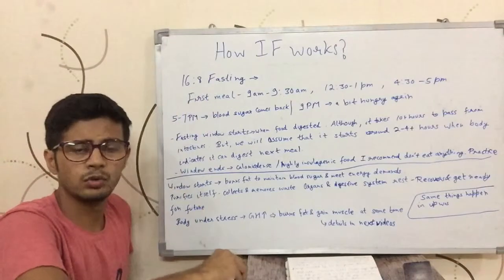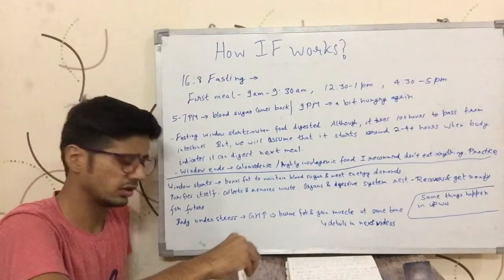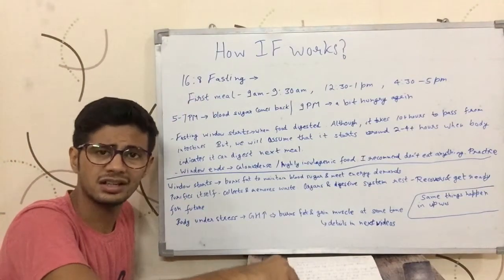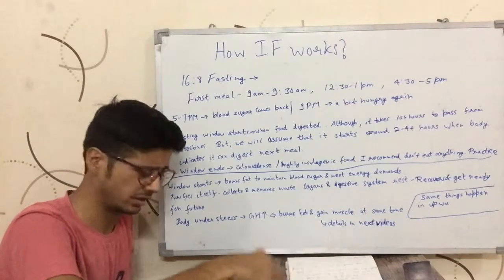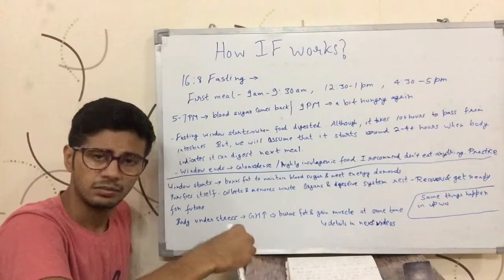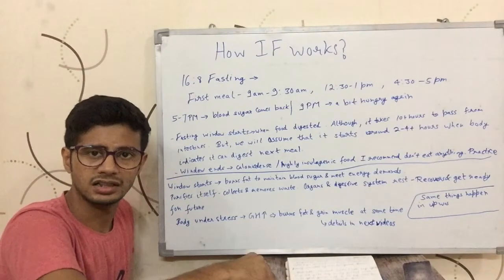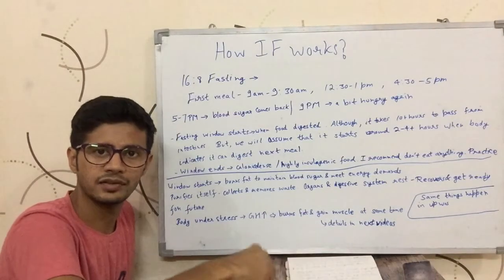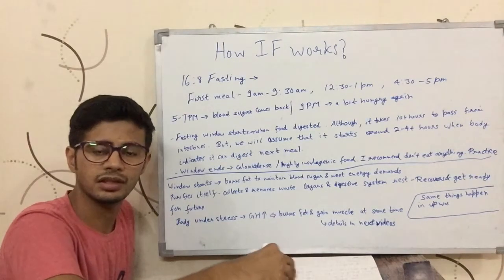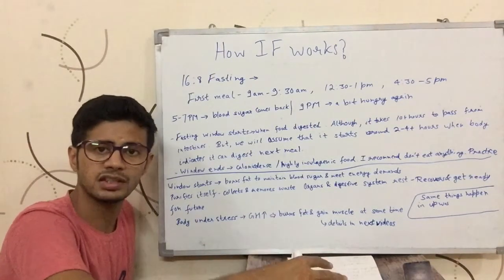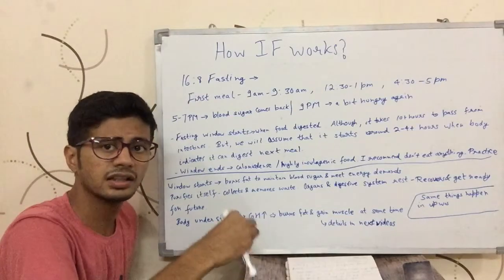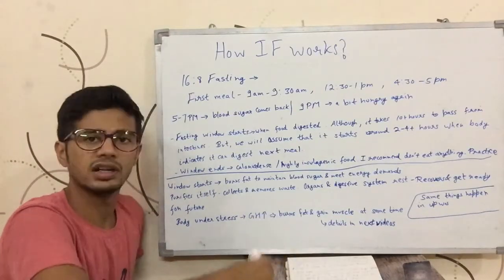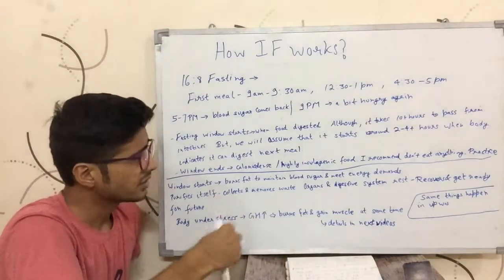At the beginning, it is difficult to fast for 16 hours. It is better to start with 12 hours, then 13 hours, 14 hours, 15 hours, 16 hours gradually. For example, 1 week at 12 hours, then 10 days at 12 hours, then increase by 1 hour, then 12-13 days at 13 hours, then 10-15 days at 14 hours. Then 15 hours, then 16 hours.